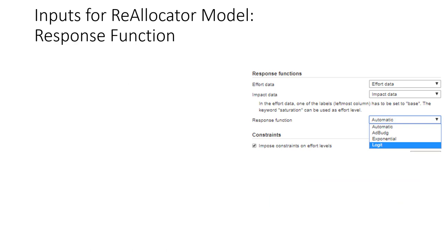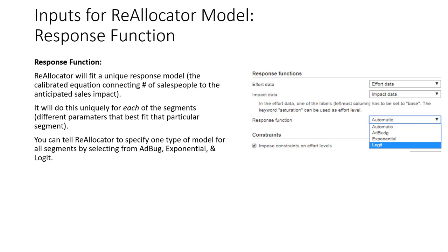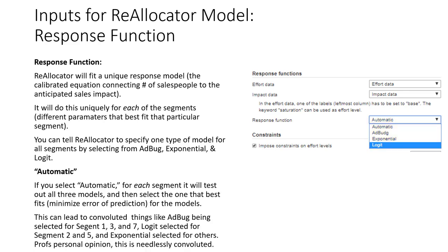There's one more important setup step: the response function. For each of the 14 models, InGenius will take the different hypothetical levels of salespeople and their outcomes and fit a mathematical response model uniquely to each market. We can choose between an adbug model, an exponential model, and a logistic model, or select automatic. If automatic is selected, InGenius tests all three models in each segment and selects whichever fits best.